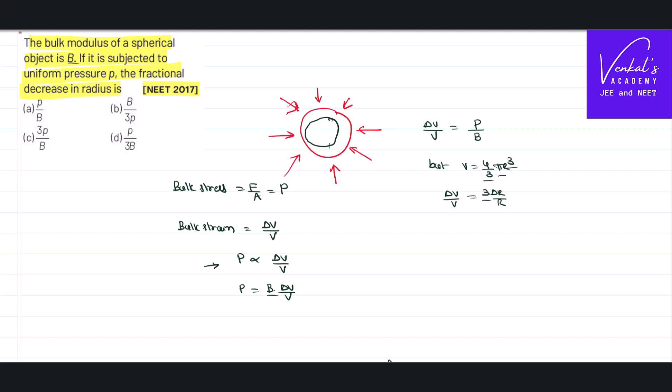So that change in volume will also be small. In the place of delta V by V, I can write 3 into delta r by r. Therefore, 3 into delta r by r equals pressure by bulk modulus.